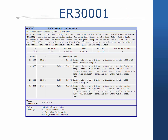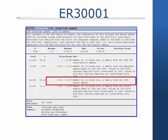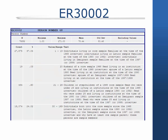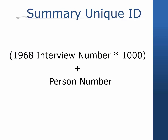Variable ER30001 is the 1968 family interview number, also called 68ID. This variable uniquely identifies each family and also indicates the original sample from which the family was drawn — that is, whether it's from an SRC random sample, the SEO low-income oversample, or an immigrant refresher. Variable ER30002 is the person number for an individual. To identify the same individual across all waves, you would use the 1968 ID in combination with the person number. To create a single ID, you can multiply the 68ID by 1000 and then add the person number so that each individual can be uniquely identified.